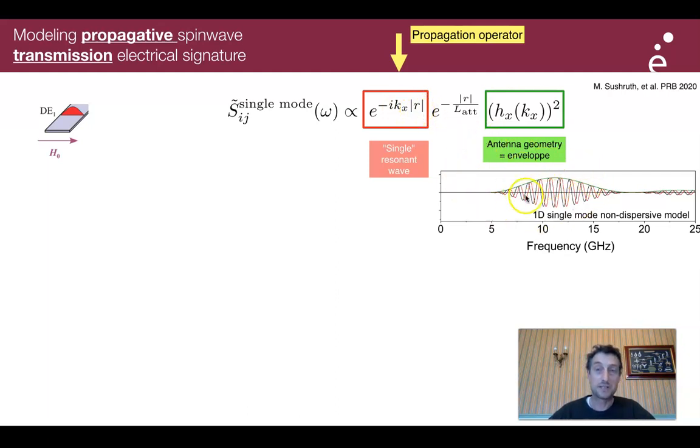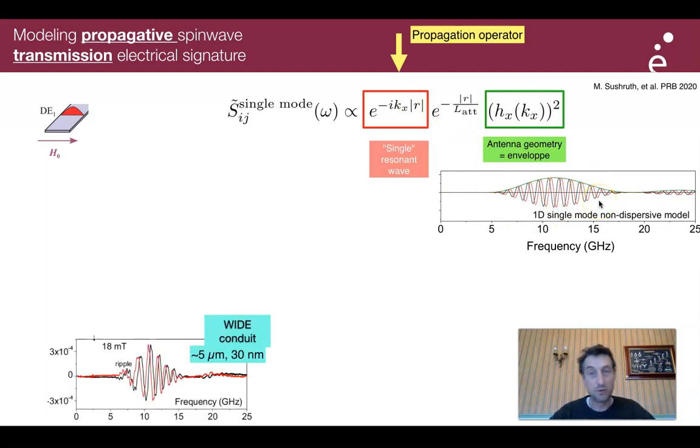This phase term is solely determined by the k-vector of the spin wave considered at the given frequency and the distance that it propagates. Indeed, it predicts a simple spectrum. In many samples, this is really what happens. For instance, if I use a wide conduit, 30 nanometer thick cobalt iron boron, I typically have this kind of spectrum.